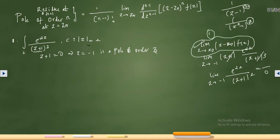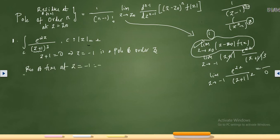All the problems we solved before were poles of order 1. If you substitute n = 1 in the general formula, you arrive at the simple formula we used previously. Since this is a pole of order 3, we must use the general formula with n = 3 instead.